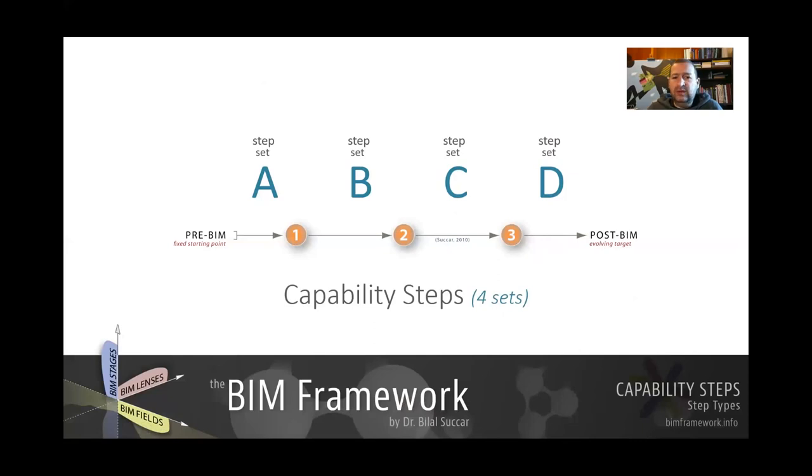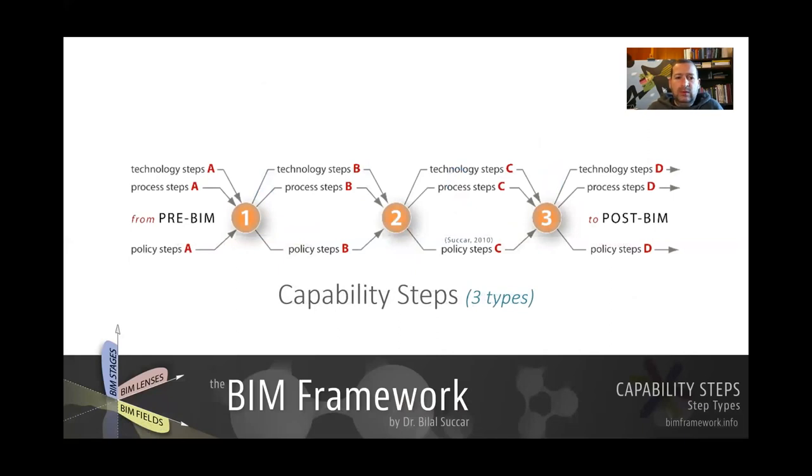So now, these are sets, like a combination of different types of steps. If we look at them more closely, we'll notice that when we want to go from pre-BIM to one, from one to two, from two to three, we'll see that within these A, B, C, and D sets, there are three types. Within each set, there are three types. For example, within set A, we've got technology steps A, process steps A, and policy steps A.